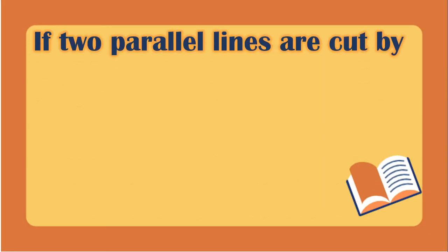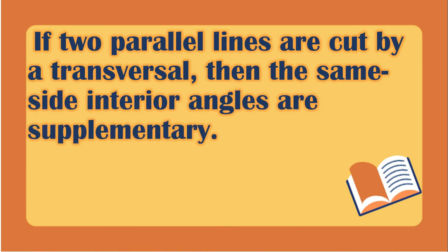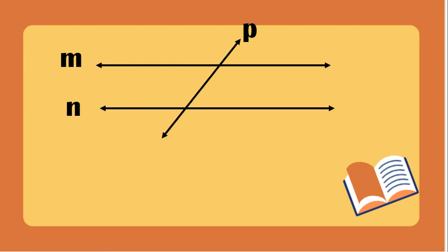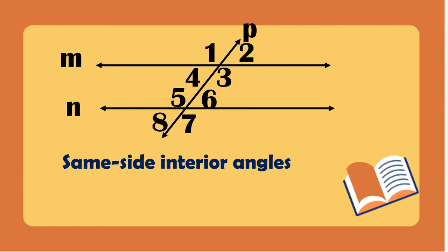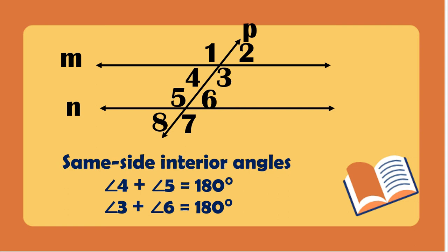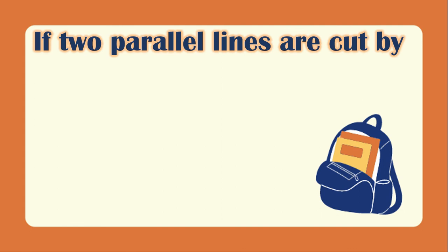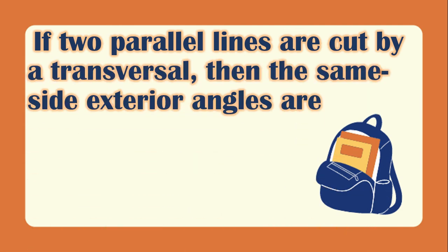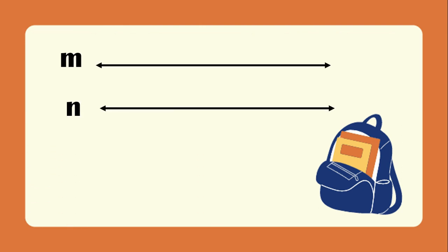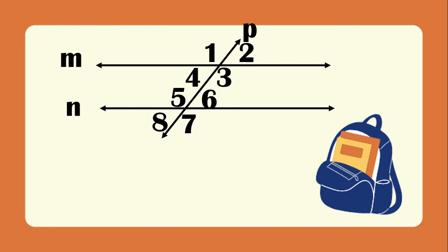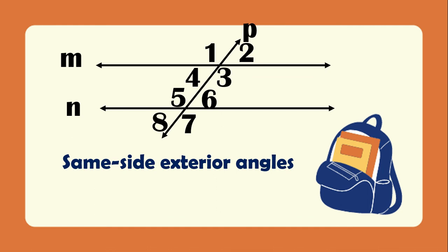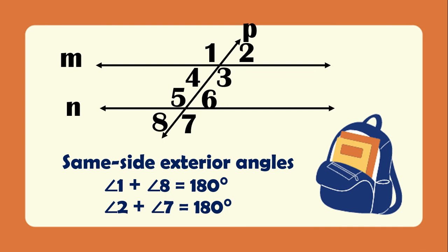Another theorem: if two parallel lines are cut by a transversal, the same-side interior angles are supplementary — their sum is 180°. So angle 4 + angle 5 = 180° and angle 3 + angle 6 = 180°. The last theorem: the same-side exterior angles are also supplementary, so angle 1 + angle 8 = 180° and angle 2 + angle 7 = 180°.